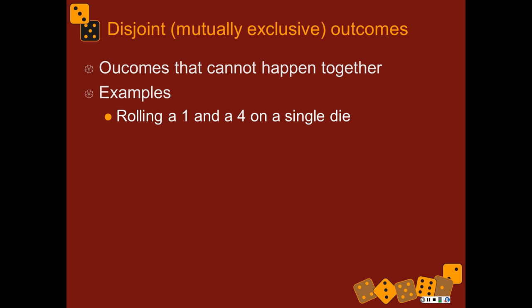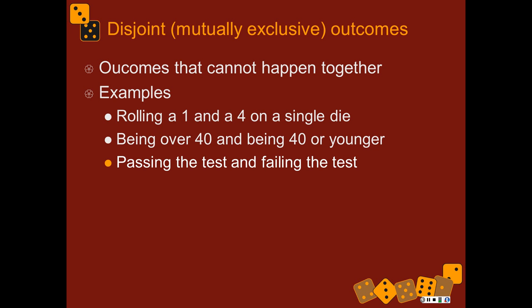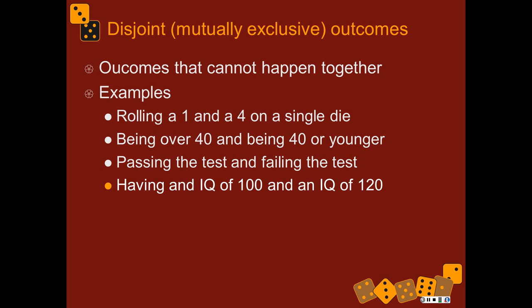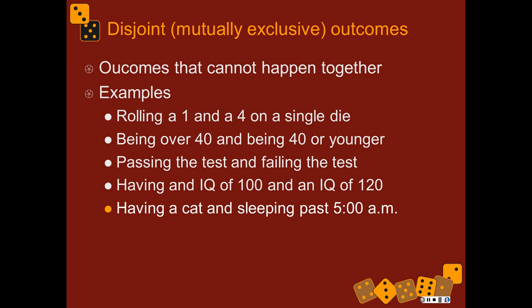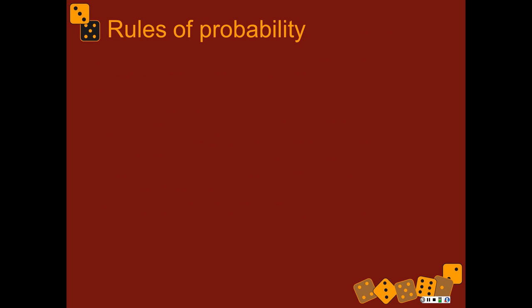So you can't roll a die one time and get both a 1 and a 4 under normal rules. You can't simultaneously be over 40 and be age 40 or younger. You can't simultaneously pass the test and fail the test — except in some weird philosophical way, but in universities, no. It's one or the other — you can only have one of these things happen. You can't have an IQ of 100 and also have an IQ of 120 at the same time. So these are disjoint or mutually exclusive outcomes, and the rules of probability are different for those than for outcomes that are not disjoint.